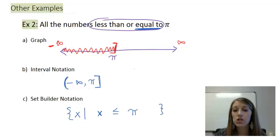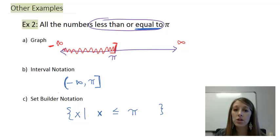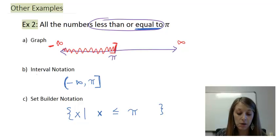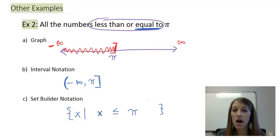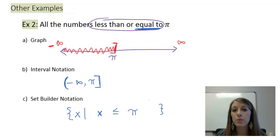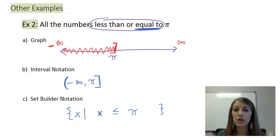An important thing to note on the homework is you're not always going to be going from words to these three formats. It might give you a graph and ask you to convert it to interval and set builder notation, or it might give you one and ask you to fill in the missing pieces — so you could be going from any one of these formats to any other. Also, shading on the online homework will be easier than by hand — it gives you one version of the shading to use, so just focus on putting the parentheses and brackets in the right places. And that finishes interval, set builder, and graphing notation.